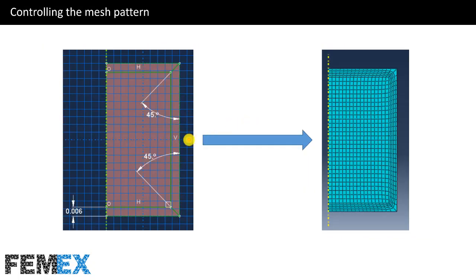In this model, I want to simulate the compression test of a hyperelastic cylinder, so I must use this kind of mesh pattern. I must create this kind of partitioning that allows me to create this mesh pattern. When simulating hyperelastic materials, large deformation will occur, so we must use a specific kind of mesh pattern.